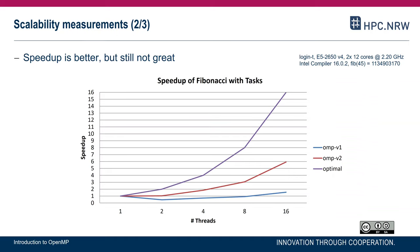How does this look from a performance perspective? It's improving — but with 16 threads we see a speedup of only 6, and for two threads we still see no speedup at all. This is with Intel compiler version 16 on an Intel Xeon E5 machine. Different compilers — and more importantly, different runtimes — will give different results. The input here is 45.